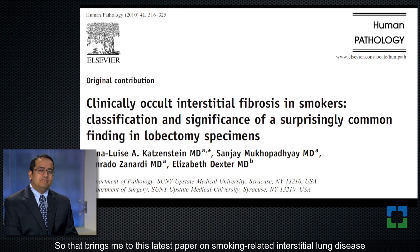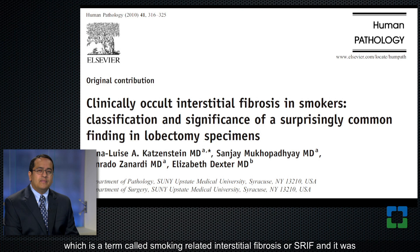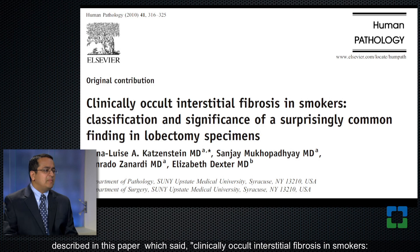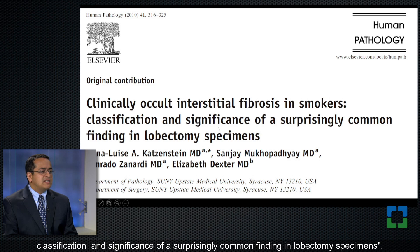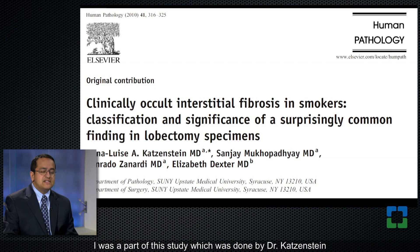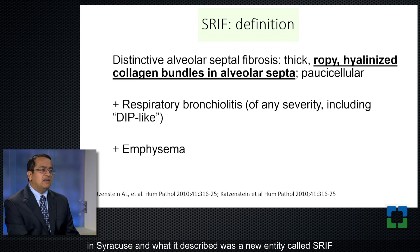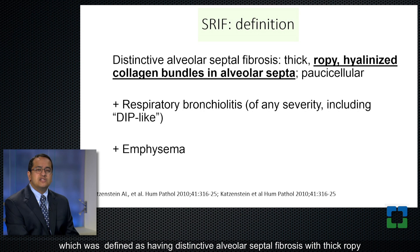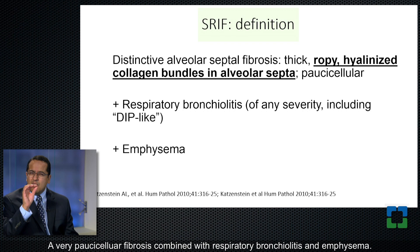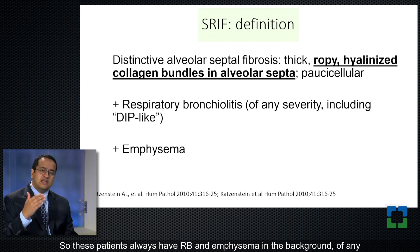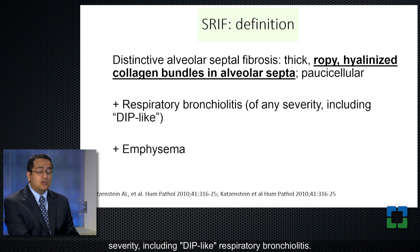That brings me to the latest paper in smoking-related interstitial lung disease — a term called smoking-related interstitial fibrosis, or SRIF. It was described in a paper titled 'Clinically occult interstitial fibrosis in smokers: classification and significance of a surprisingly common finding in lobectomy specimens.' This study was done by Dr. Kadzenstein in Syracuse, and I was a part of it. SRIF was defined as having distinctive alveolar septal fibrosis with thick, ropey, hyalinized collagen bundles in the alveolar septa — a very paucicellular fibrosis — combined with respiratory bronchiolitis and emphysema, including DIP-like respiratory bronchiolitis.